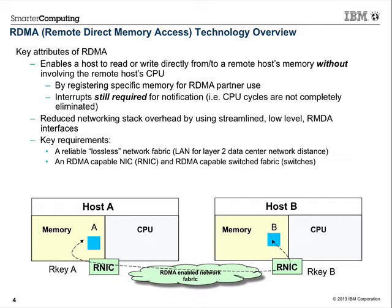What RDMA allows you to do is let two discrete compute platforms directly reference memory in another platform — basically DMA from a remote standpoint using networking technology. There are a couple of requirements highlighted in green on the chart: platforms require special adapters, sometimes called RNICs — RDMA-capable network interface cards.